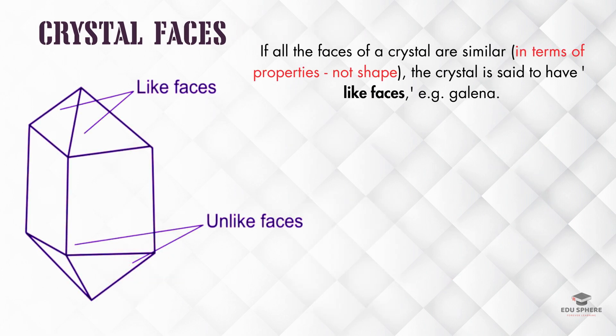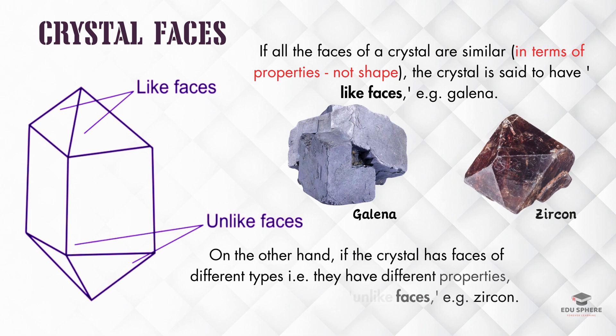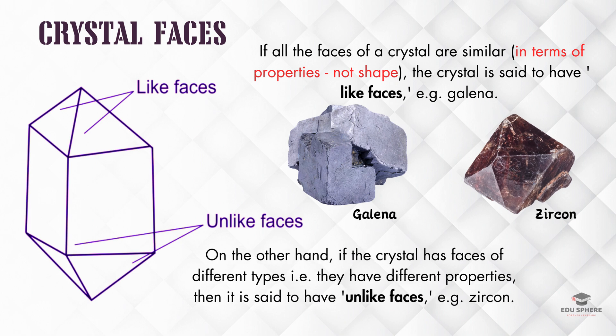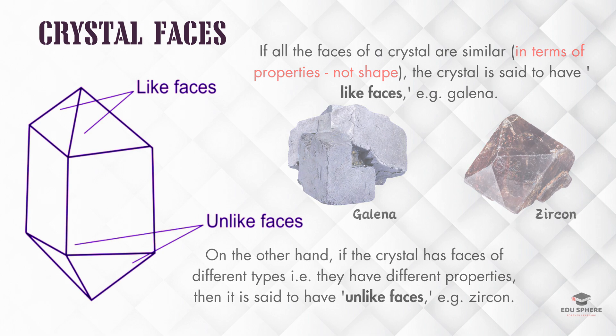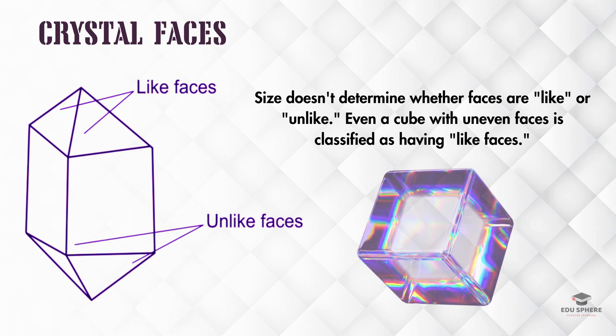Crystals can have faces of the same type, like a perfect cube of galena. These are called like faces because they share identical properties. Zircon, on the other hand, might have a combination of flat and pointed faces, which are classified as unlike faces. Remember, the size of a face doesn't define like or unlike. For example, a cube with uneven faces is still considered to have like faces.